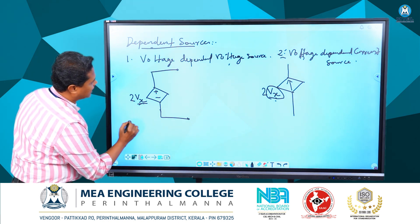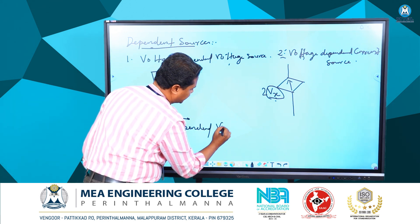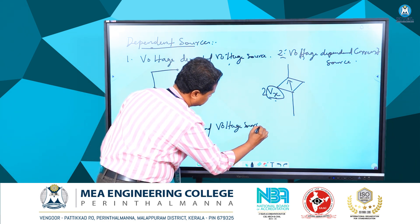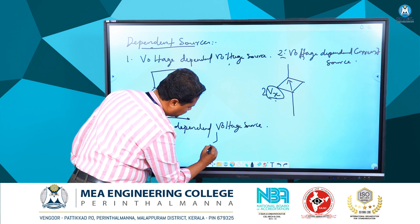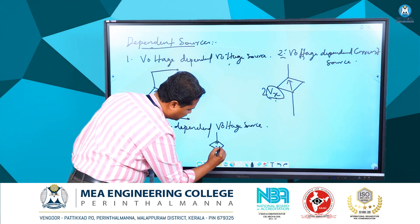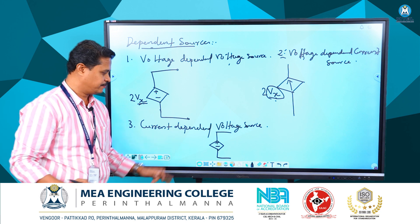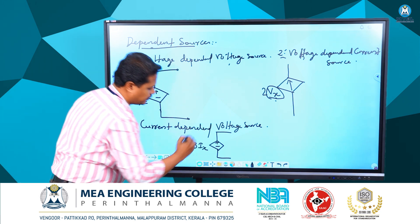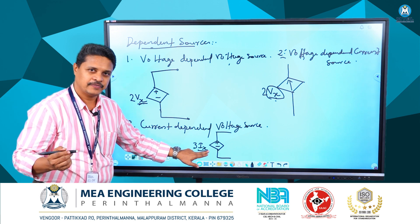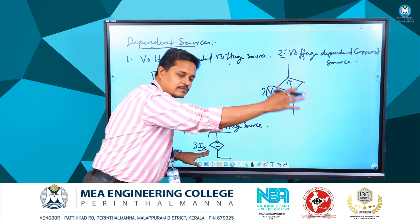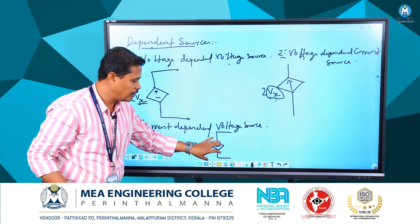The third type is a current dependent voltage source. It is a voltage source, so its representation is a diamond shape with plus-minus markings. The value of this voltage source — say 3Ix — is dependent upon a current Ix that is flowing somewhere in the network. When that current changes, the value of this voltage source will change, which is why it is called a current dependent voltage source.